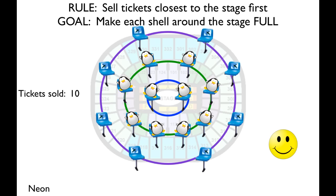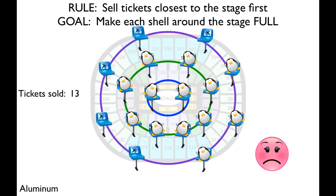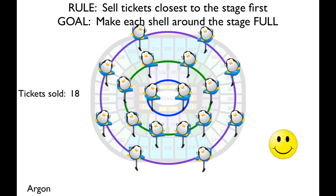What about thirteen tickets? So now we're moving into that third shell. We're always filling from the inside out, but now that third shell has only three occupied seats and five empty ones. So that's not so happy, and that is the element aluminum. In our last example, we have eighteen seats, and you notice we have all three shells full. This is a very stable configuration. This is the noble gas, argon.